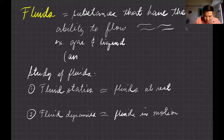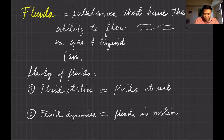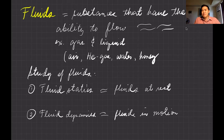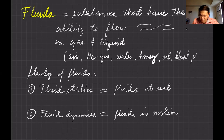Fluids can be gases or liquids. In gases, molecules are far away from each other. Examples are air, and helium gas used in balloons. Water is a very common example of a liquid fluid. Honey is also a fluid — it's viscous, but it still has the ability to flow. Oil is another example, and in our body, blood is a fluid.